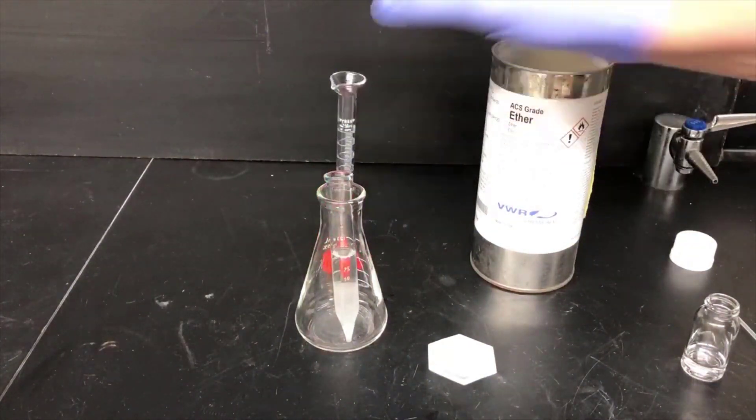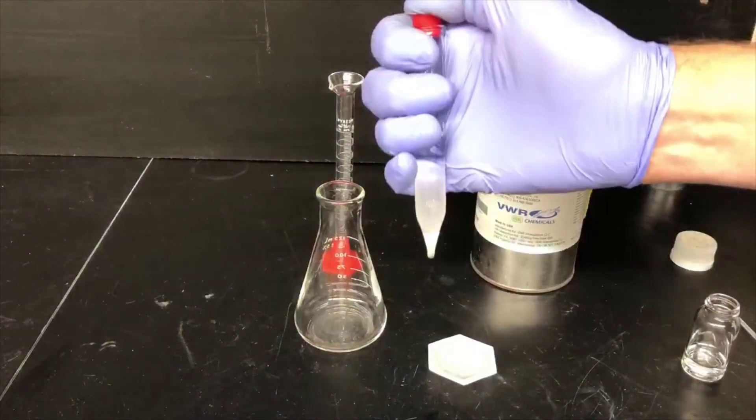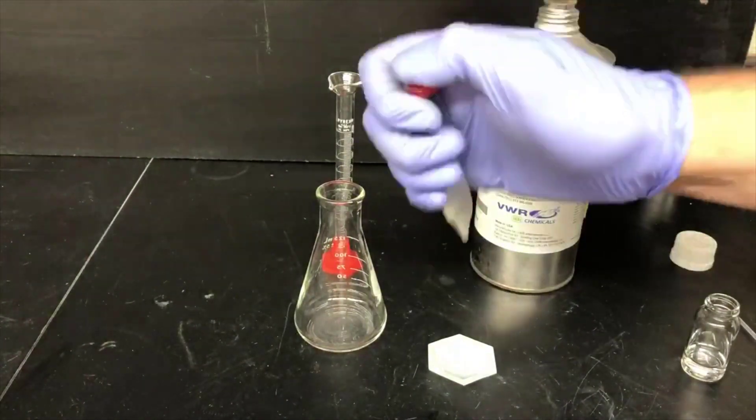I'll cap that vessel, and I'll give it a shake. This is doing an extraction. The cyclohexanone is going to migrate into the ether layer.